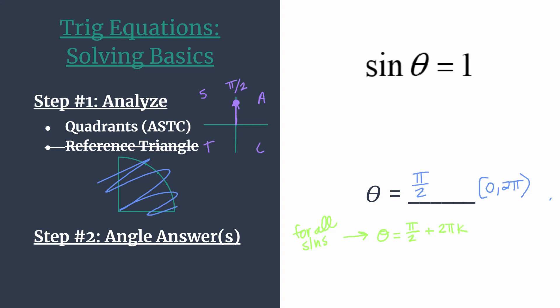And depending on what integer you substitute in, you'll get a different coterminal angle to pi over two, which will also be a solution to the above equation. So try that out, substitute in different values for k, plug that value back in, you'll evaluate and know that you have a true equation. So thus you have a solution.